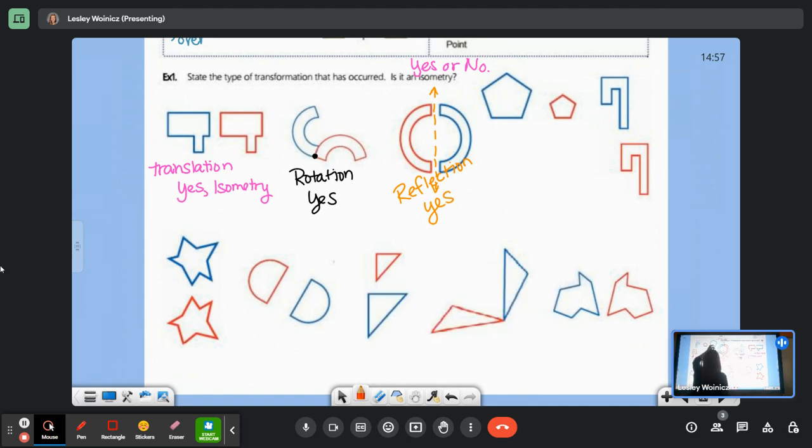Next one. Dilation. You know how your pupils dilate? You can think about what happens to your pupils. Is that an isometry? No. It keeps the angles, but the lengths of the sides changed. Last one on this row. It's another translation. Is it an isometry? Yes.